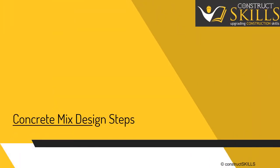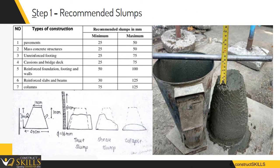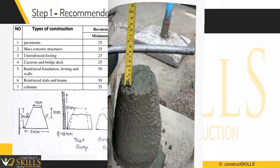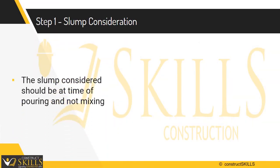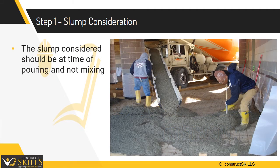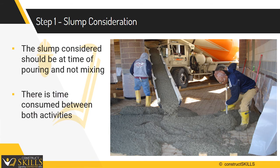Moving on to the steps for designing the concrete mix. Step 1: Decide the recommended slump. Consider the slump required depending upon the component of the building or method of placing concrete. For pavements, the maximum slump to be considered is 50 mm. For footings, foundation walls, and bridge decks, it has to be around 75 mm. For pumpable concrete, the slump has to be around 120 mm. The slump to be considered is at the time of pouring, not manufacturing, as there might be some time between both activities.